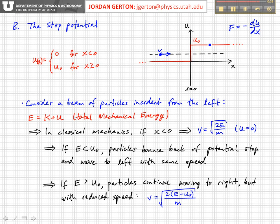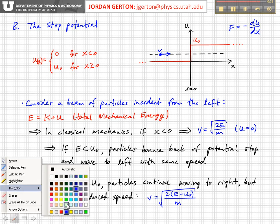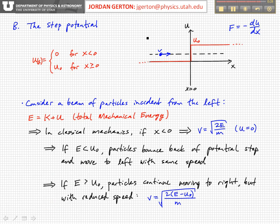On the other hand, in the classical case, if we have a total mechanical energy that's greater than the step potential height, then this particle would proceed — it has enough energy to get over this potential barrier, but it would just slow down. Its velocity after it passes the potential to the right would be the square root of 2(E minus U naught) over m.